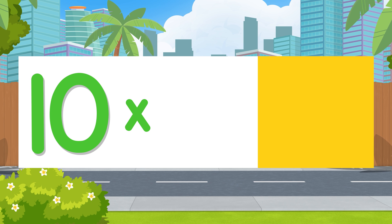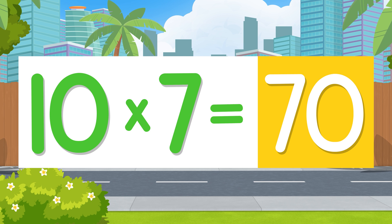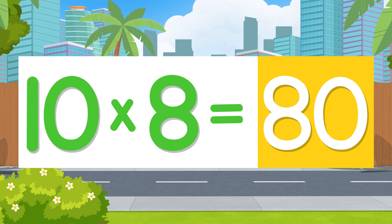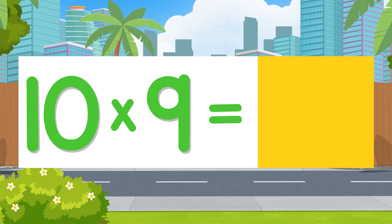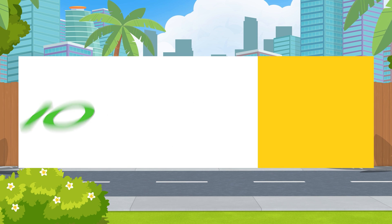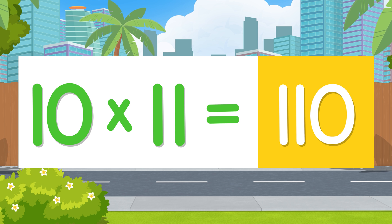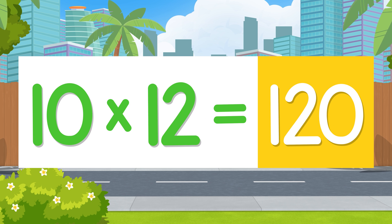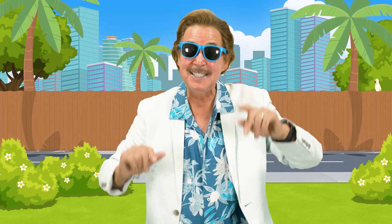Ten times seven is seventy. Ten times eight is eighty. Ten times nine is ninety. Ten times ten is one hundred. Ten times eleven is one hundred ten. Ten times twelve is one hundred twenty. To multiply by ten, you take the number then add a zero to an end — that's the end.